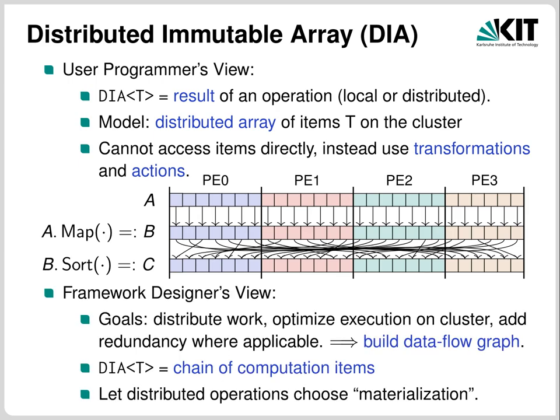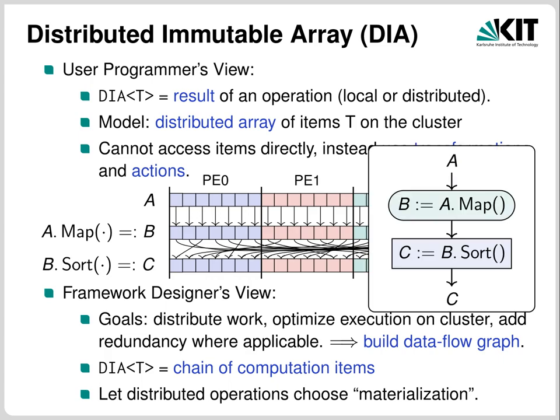Inside the framework, these distributed arrays usually don't exist explicitly. Instead, a DIA is a chain of operations which is built lazily — the actual operations are only executed when the user triggers an action that must deliver some external result. Only then does the framework execute the operations necessary to produce that result. The DIAs in the execution are actually only the conceptual glue between operations, and the operations themselves determine how to store the data. The chaining of operations can be visualized as a graph called DIA data flow graphs, where the operations are vertices and the DIAs are the edges.